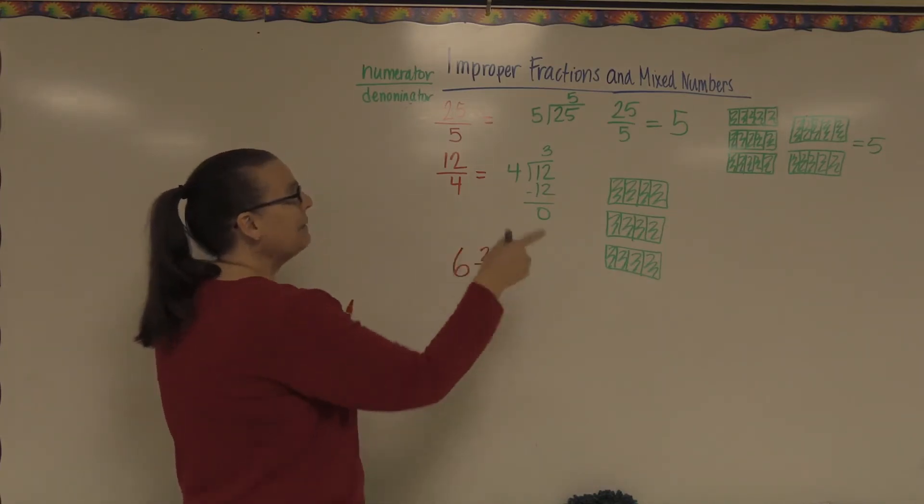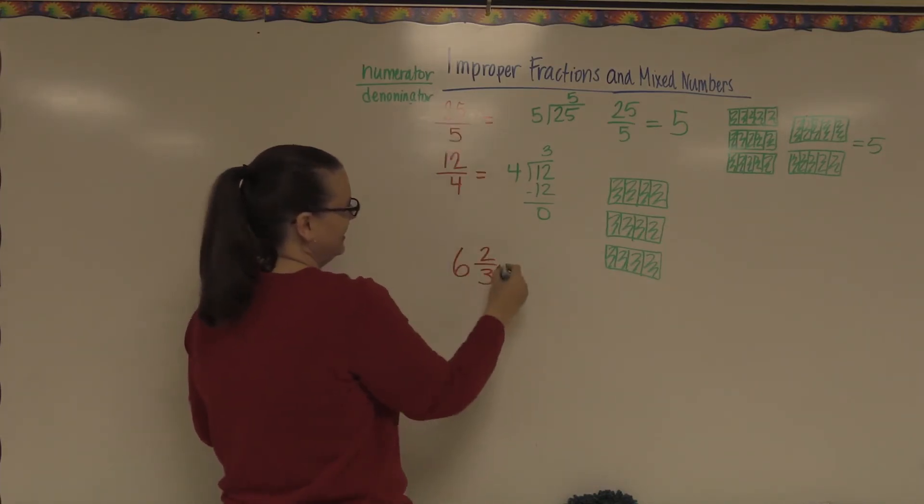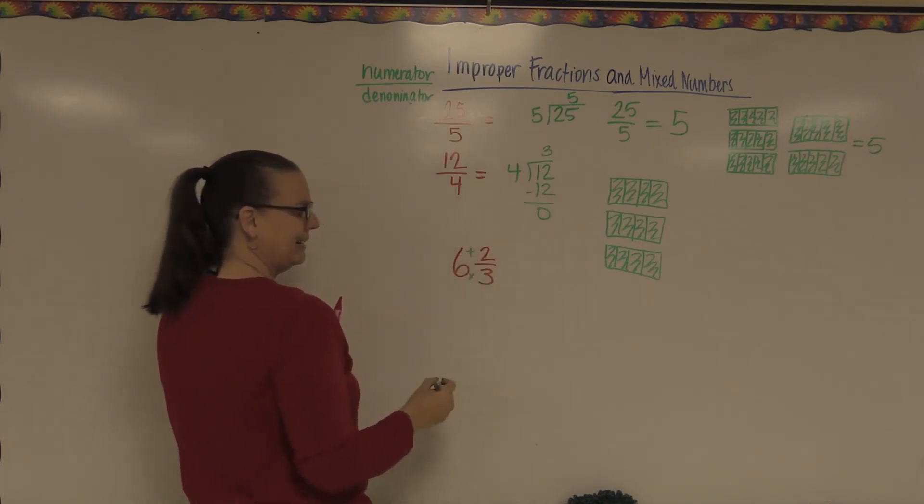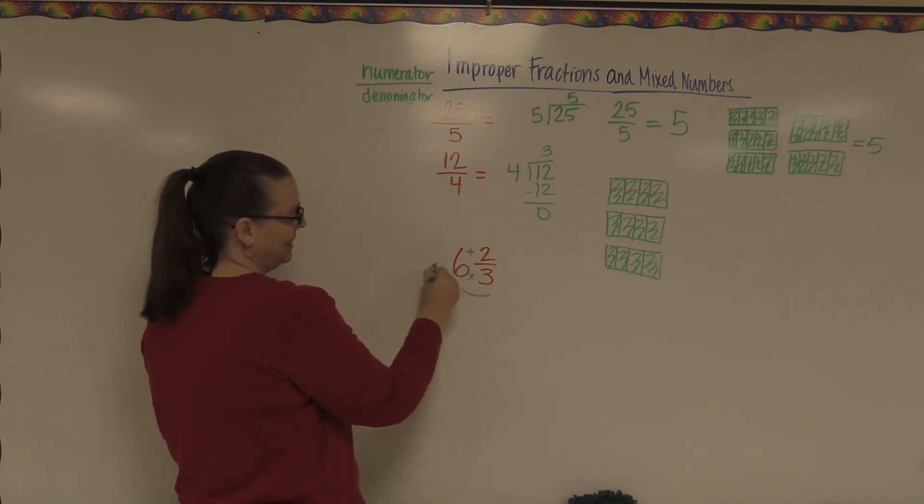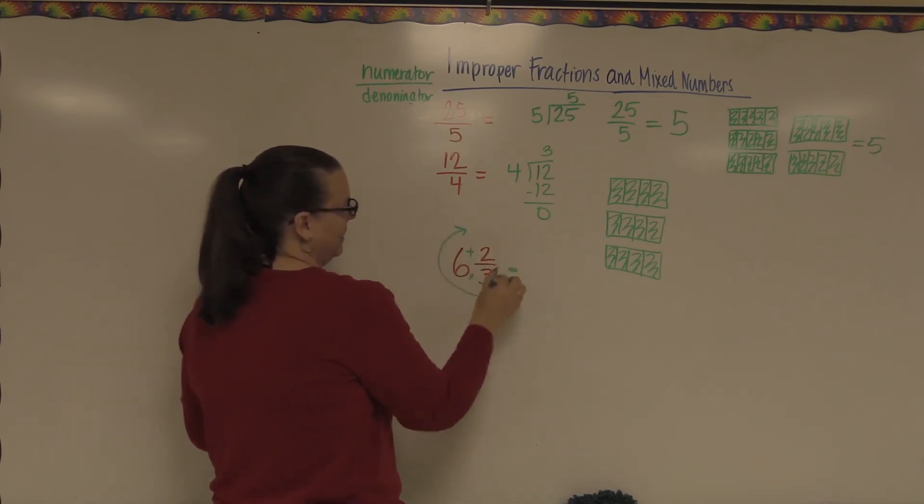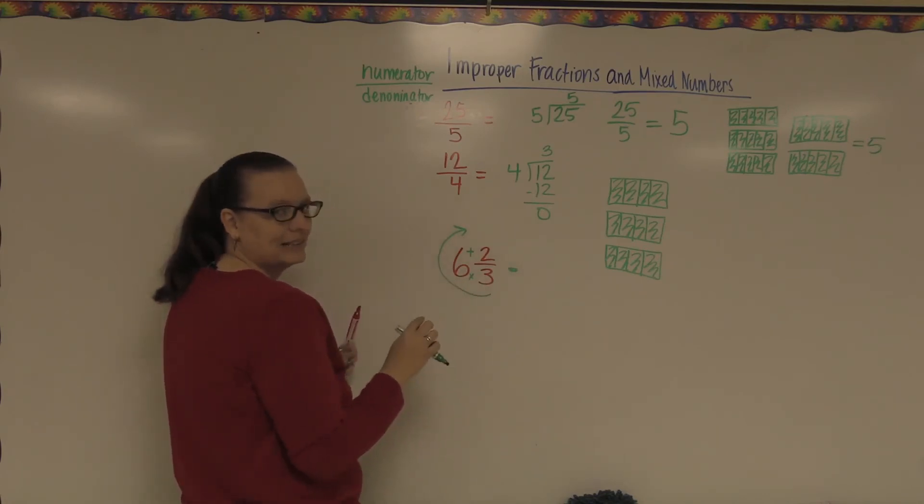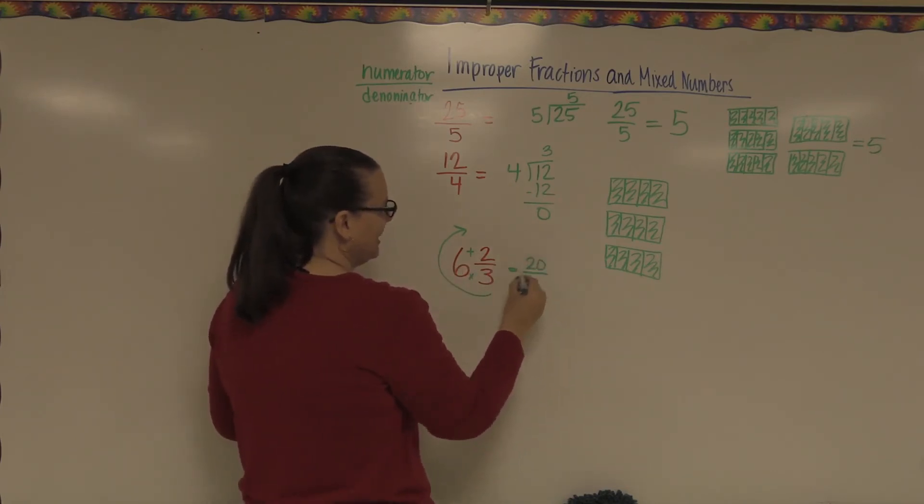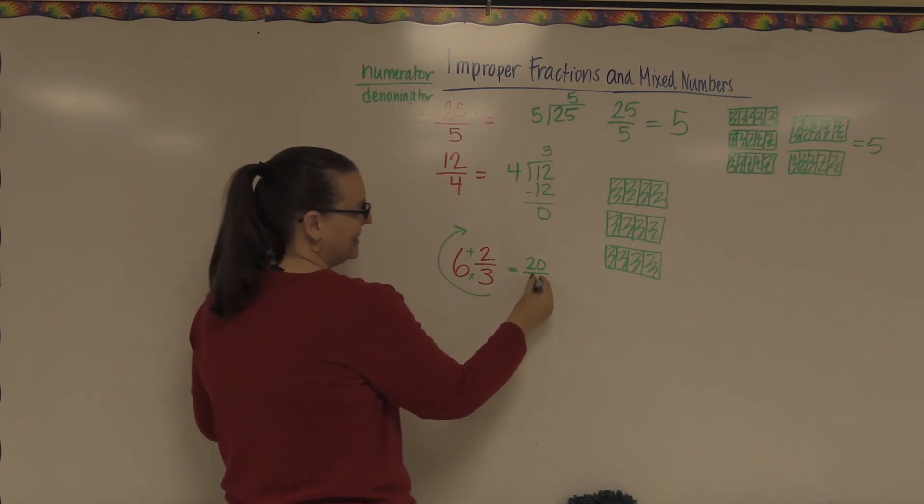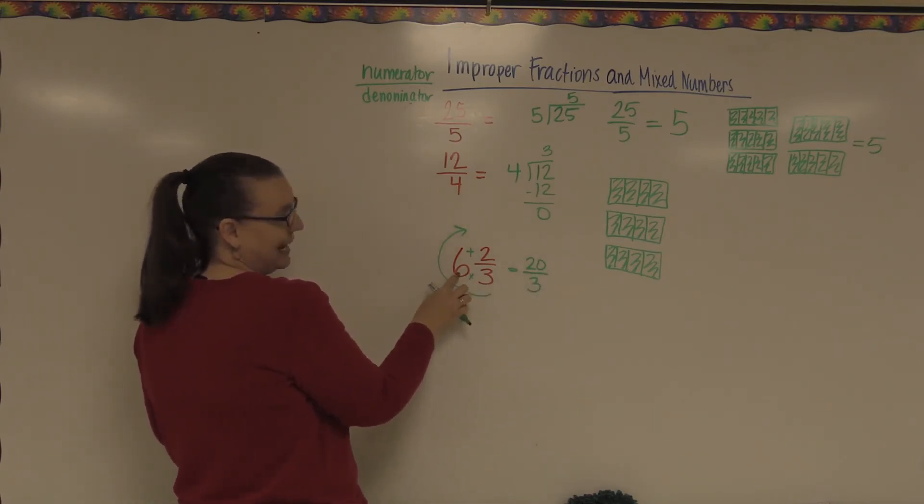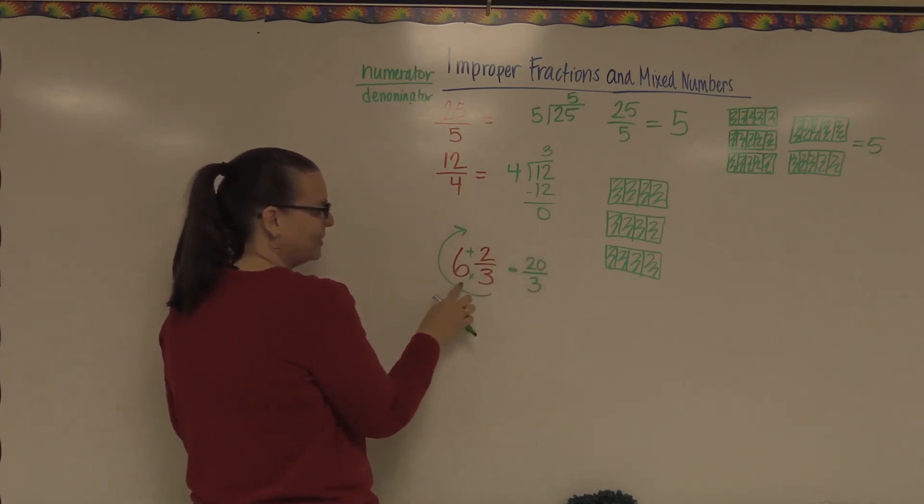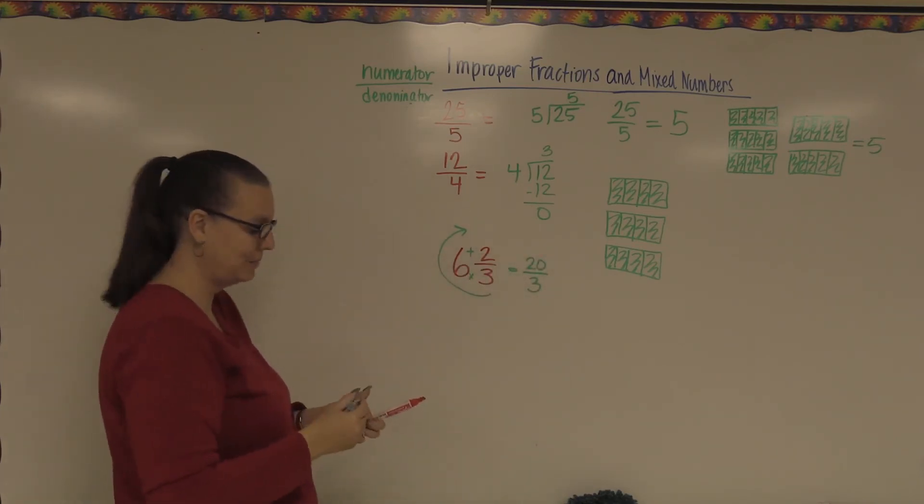If we're going to turn that into an improper fraction to look like this, what I have to do is multiply here and I have to add here. So I'm going to multiply. It goes kind of in this direction. I'm going to start with three times six. Well, three times six is 18. Then I'm going to add these two pieces on the top. So that becomes 20. My denominator stays the same. So three times six is 18. 18 plus two is 20. This improper fraction is the same thing as this mixed number.